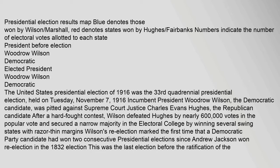Presidential election results map: blue denotes states won by Wilson and Marshall, red denotes states won by Hughes and Fairbanks. Numbers indicate the number of electoral votes allotted to each state. Incumbent President Woodrow Wilson, Democratic, was elected President.